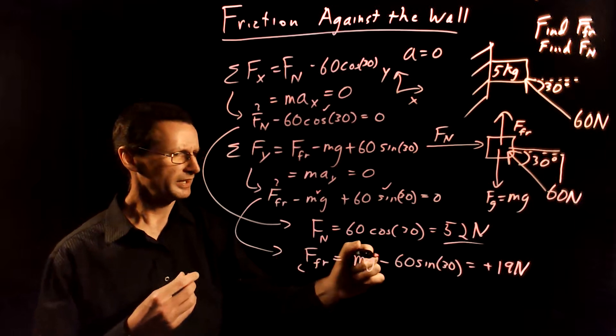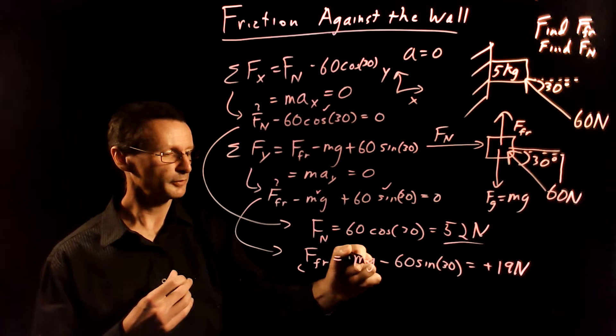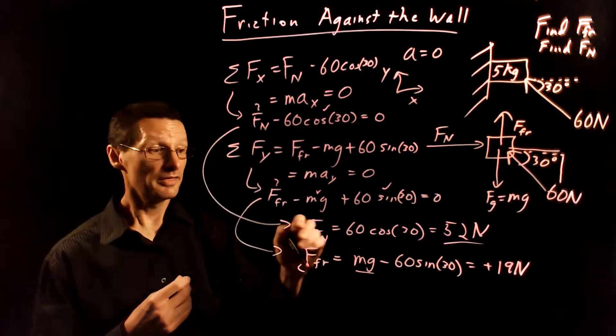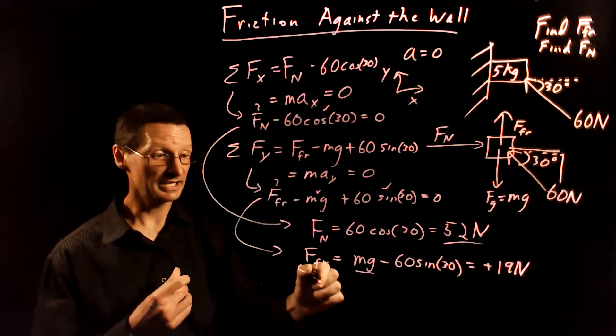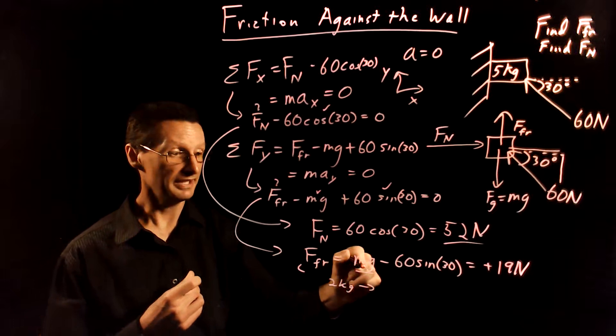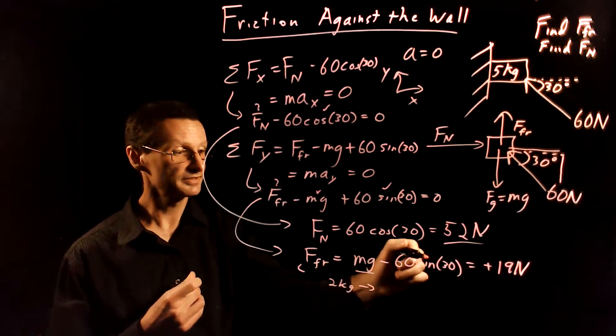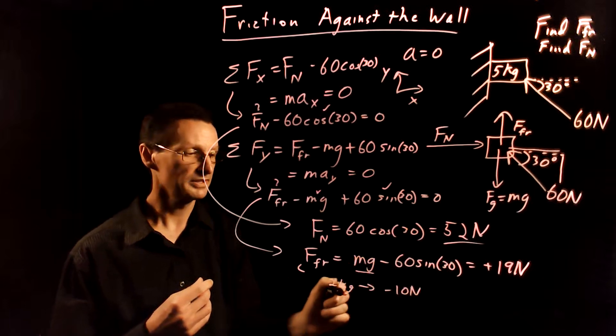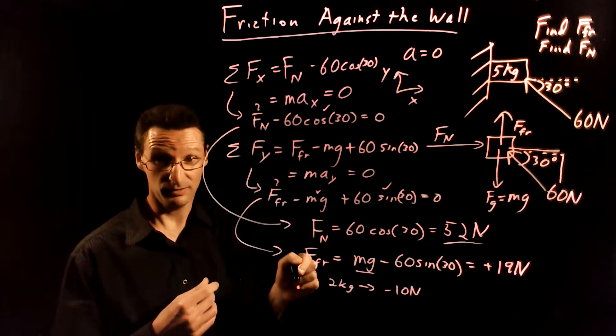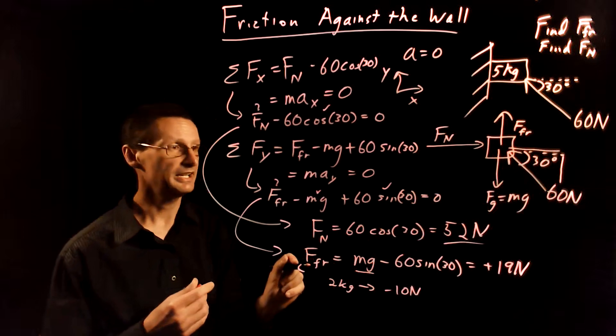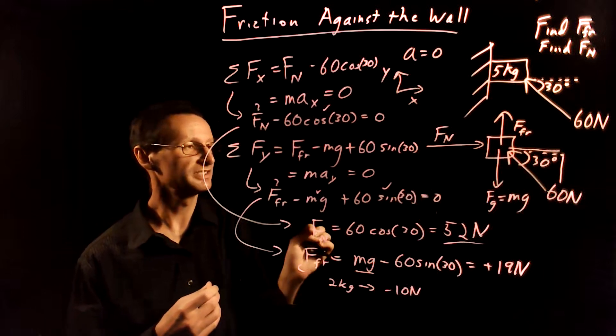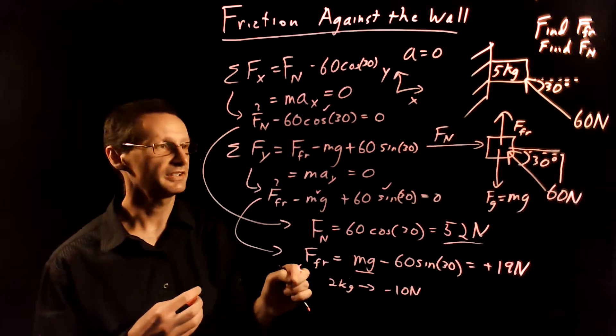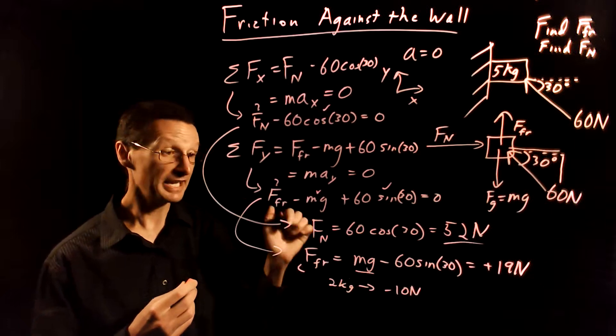Note one more note on this. Note that here we're taking force of gravity minus 60 sine 30. If this weight becomes smaller then this whole frictional force becomes negative and in fact if you use a two kilogram mass here this term becomes small enough so that this 60 sine 30 is bigger and the frictional force becomes negative 10 newtons about and that would mean that it actually points down to oppose this pushing force up. Okay and that makes sense because you know gravity is opposing this push force and if gravity shrinks too much then we need friction then to come in and oppose that push force. Okay so that's good that makes sense.